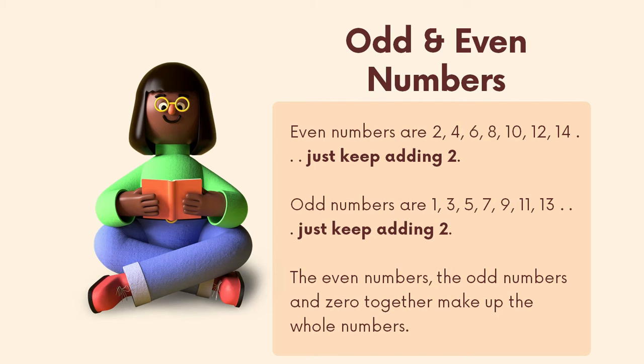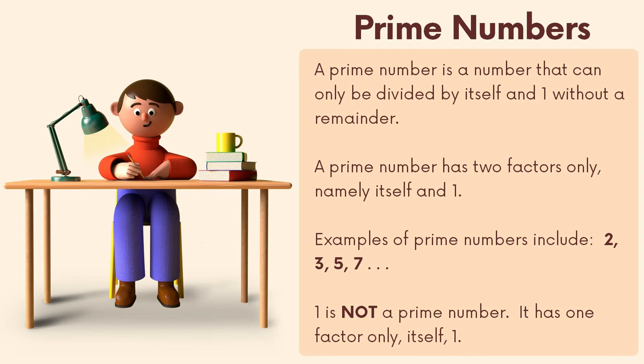Odd and even numbers: even numbers are two, four, six, eight, ten, twelve, fourteen — just keep adding two. Odd numbers are one, three, five, seven, nine, eleven, thirteen — just keep adding two. The even numbers, the odd numbers, and zero together make up the whole numbers.